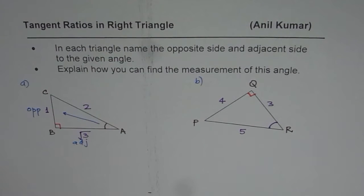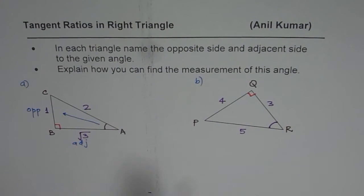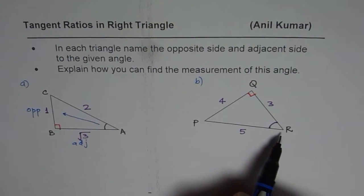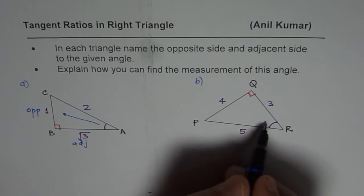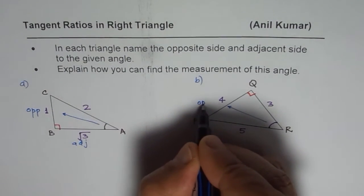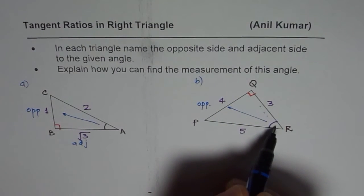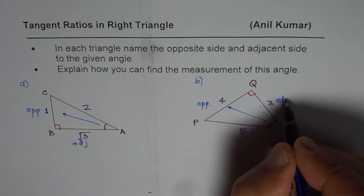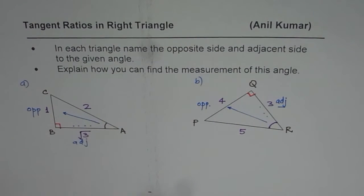That is the first part. Now let's look into the second triangle and find the opposite and adjacent side. You can pause the video, answer the question, and then match with my solution. We are looking at angle R. The side opposite will be right across — the side which is equal to 4 is the opposite side. The adjacent side is the side between the angle and the right angle.